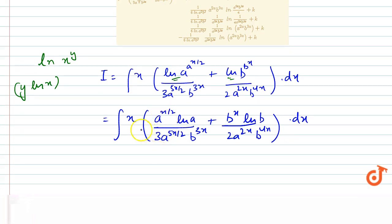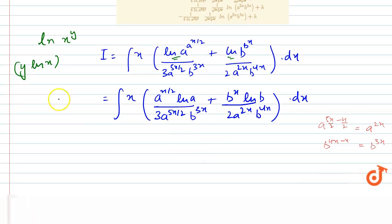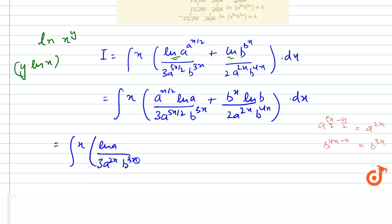Now we take out a^(3x) as a common factor. We need to find b^(4x) minus x, which gives b^(3x). So taking a^(3x) common, we get a^(3x) times a^(3x) plus log(b)/2 times a^(2x)·b^(3x), dx.